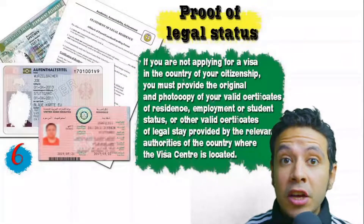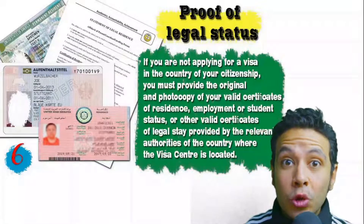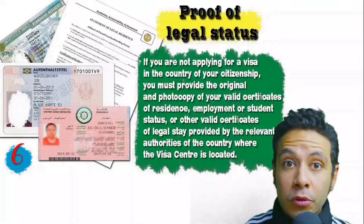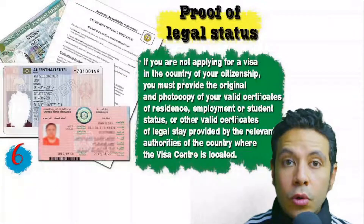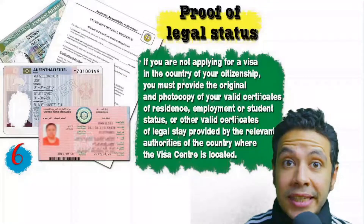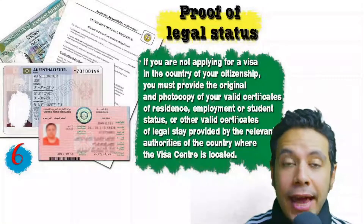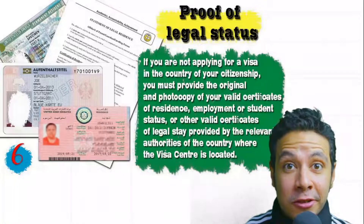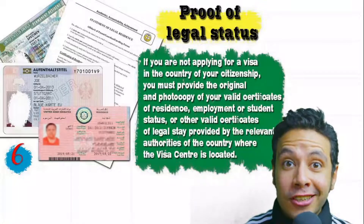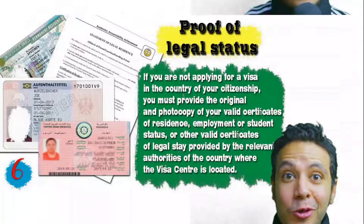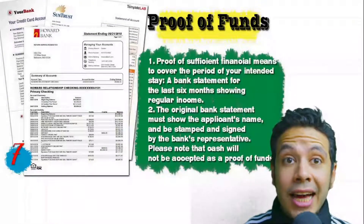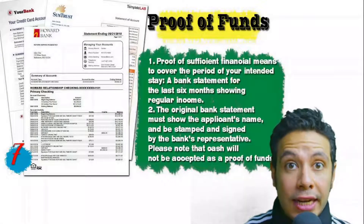In some cases you might be applying from a country different from your own. In that case, you will need to provide a proof of legal status — a certificate of legal residence in that country. In some cases, a valid residence visa for that country can also be accepted. You will also need to provide proof of sufficient funds.